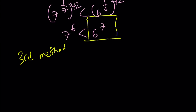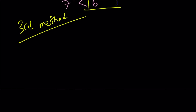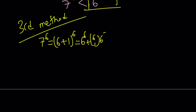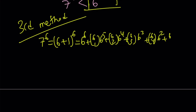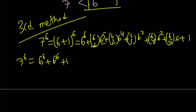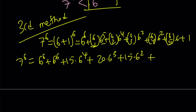For the third method, we use a totally different idea: the binomial theorem. 7 to the 6th can be written as 6 plus 1 to the power 6. Expanding using the binomial theorem gives: 6 to the 6th, plus 6 choose 1 times 6 to the 5th, plus 6 choose 2 times 6 to the 4th, plus 6 choose 3 times 6 to the 3rd, plus 6 choose 4 times 6 squared, plus 6 choose 5 times 6, plus 1. Evaluating the coefficients: 6 to the 6th, plus 6 times 6 to the 5th which equals 6 to the 6th, plus 15 times 6 to the 4th, plus 20 times 6 to the 3rd, plus 15 times 6 squared, plus 6 squared, plus 1.